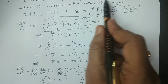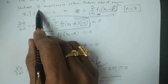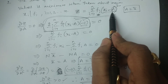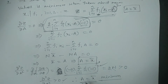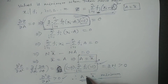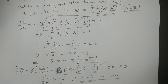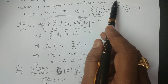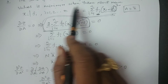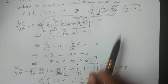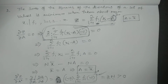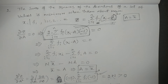So the function z — the sum of the squares of the deviations of a set of values — takes its minimum value for a equal to x̄, the arithmetic mean. That is, the sum of the squares of the deviations of a set of values is minimum when taken about the mean. That is the second property. These are the two important properties of arithmetic mean.